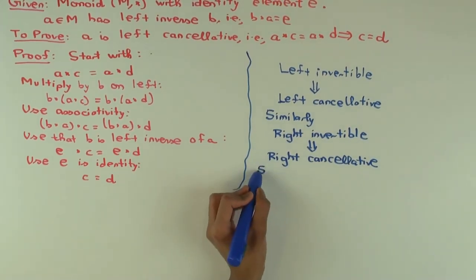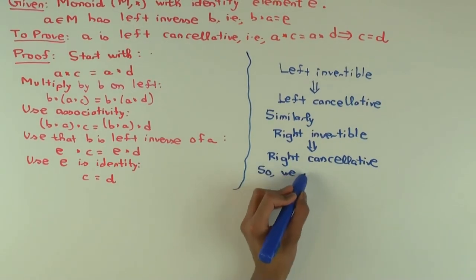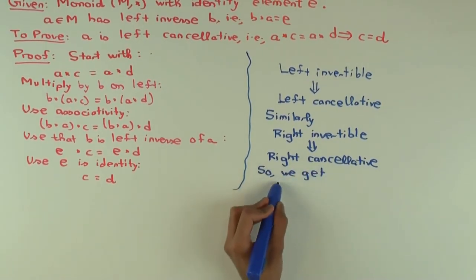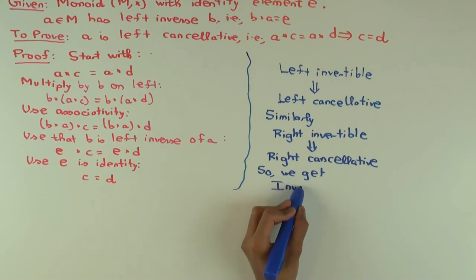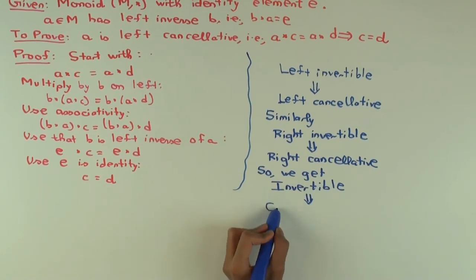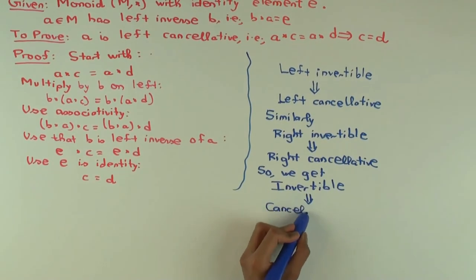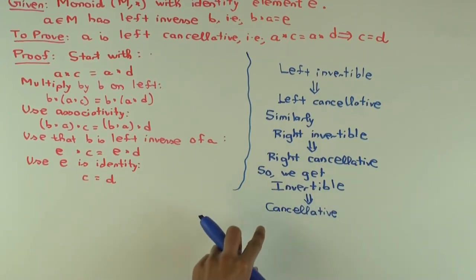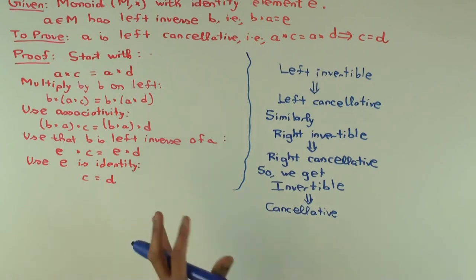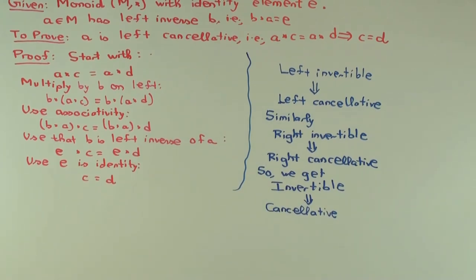So what do I mean by invertible? This means it has a two-sided inverse, but that's the same as saying it has a left inverse and it has a right inverse, because they have to be equal. And what would I mean by saying cancellative? You can cancel that particular element if it appears on the left or if it appears on the right. Either way.